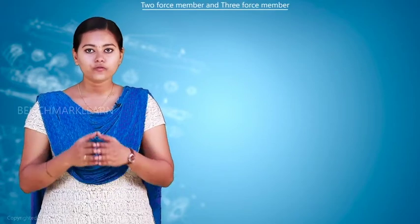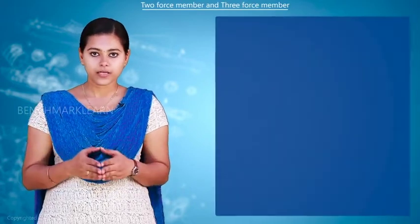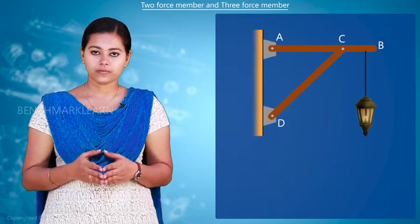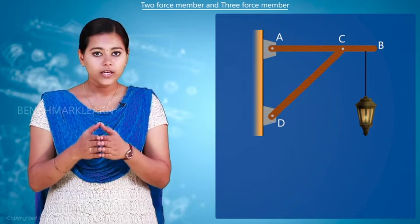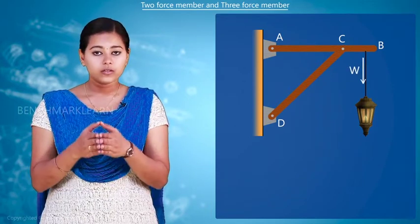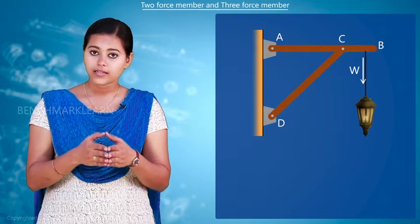To explain the concept of two force members and three force members, let's take an example of a lamp hanging as shown. We know that the weight of the lamp will be acting downwards. Here there are two members AB and CD.